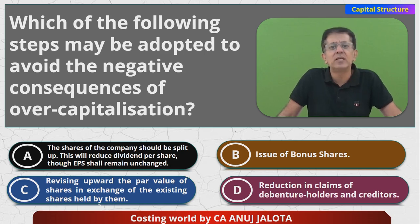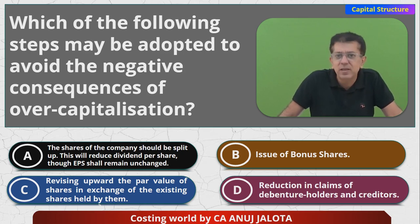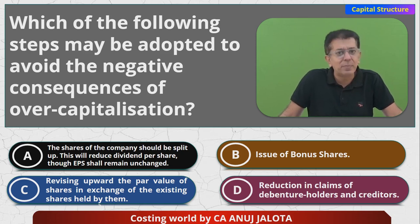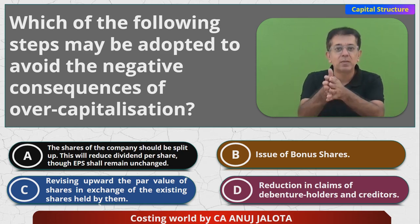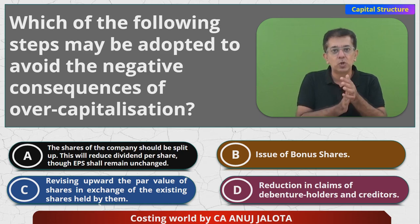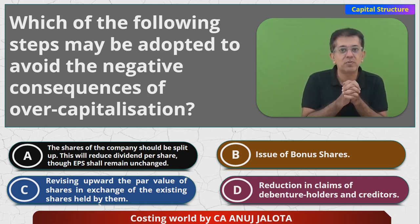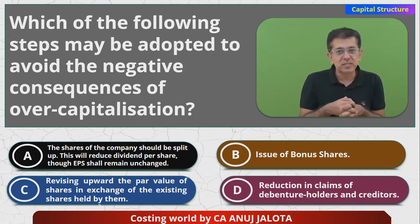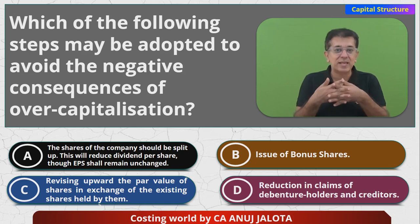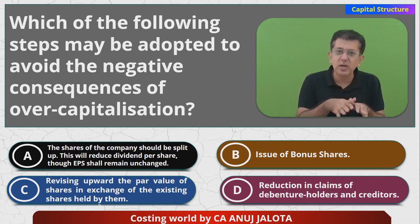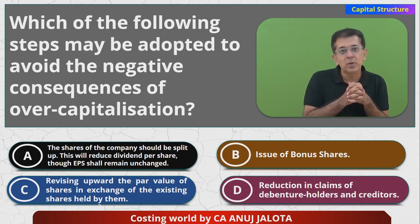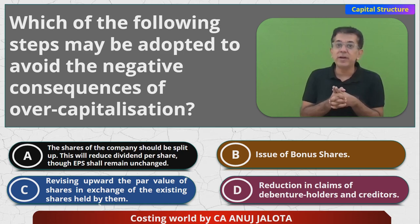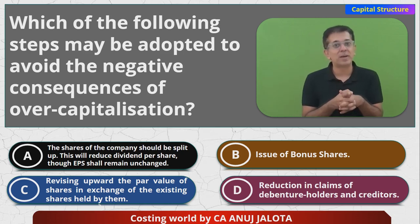Option D — reduction in the claims of the debenture holders and creditors — means trying to return back the capital. At least what will happen is that if you return the money to the debenture holders, the burden of interest will start falling. If the capital was taken from banks, try to return it back — at least your burden of interest will be falling. Note that you cannot simply redeem equity shares as that would amount to a buyback.